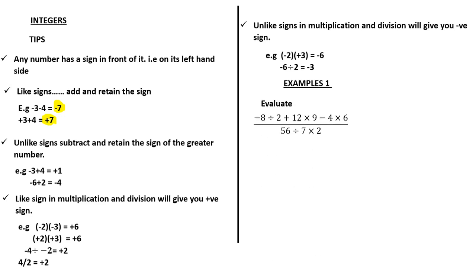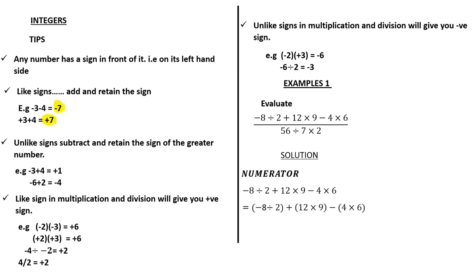Let's see some examples to illustrate this concept further. Example one: evaluate negative 8 divided by 2, plus 12 times 9, minus 4 times 6, all over 56 divided by 7 times 2. In this type of question, it is easier to split the fraction into a numerator part and a denominator part, solve them separately, and then combine. Let's focus on the numerator first: negative 8 divided by 2, plus 12 times 9, minus 4 times 6.